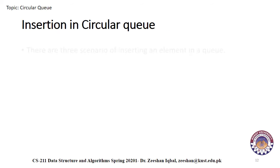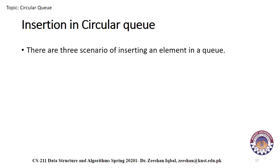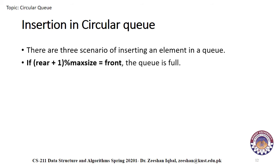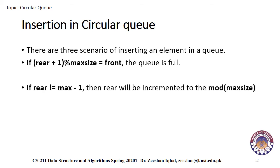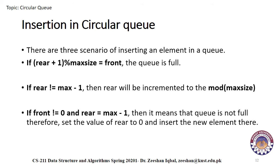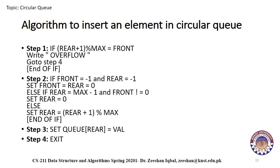While inserting in circular queues, we have to check three scenarios before adding any element. First, if rear plus one modulus max size equals front, it means the queue is full. Next, if rear is not equal to max minus one, then rear will be incremented using modulus of maximum size. If front is not equal to zero and rear equals max minus one, it means the queue is not full, so we set rear to zero and insert the new element at the zero position. This is the algorithm to insert an element in a circular queue, which we will simulate step by step.